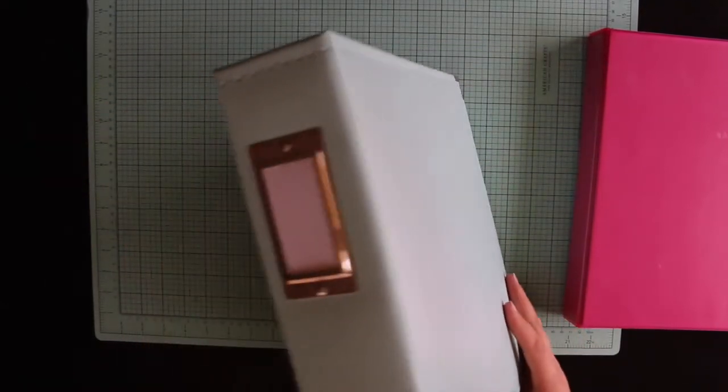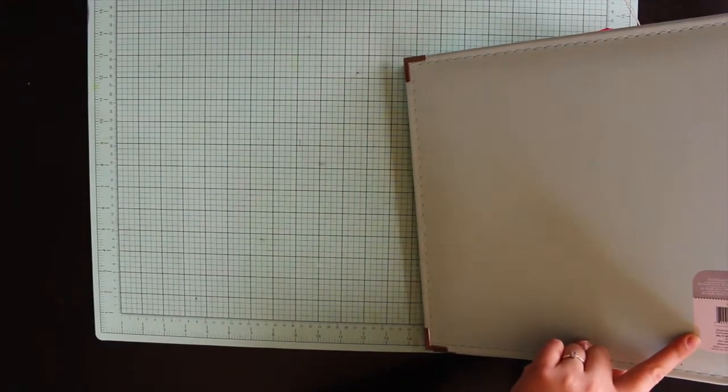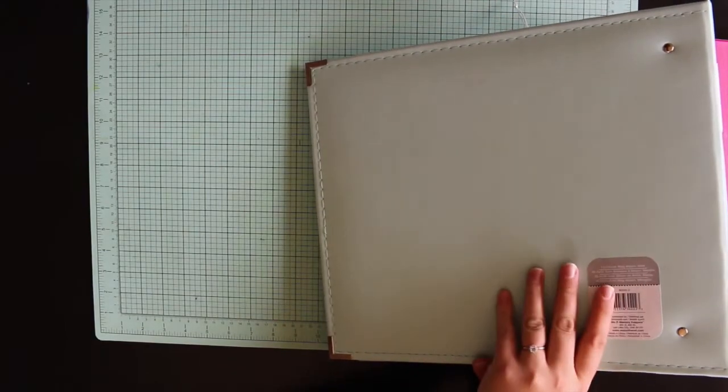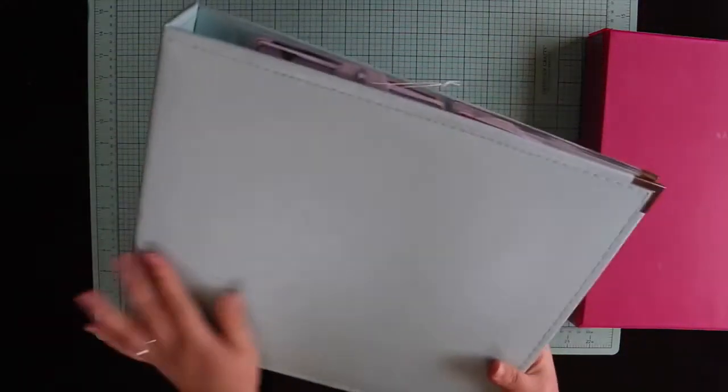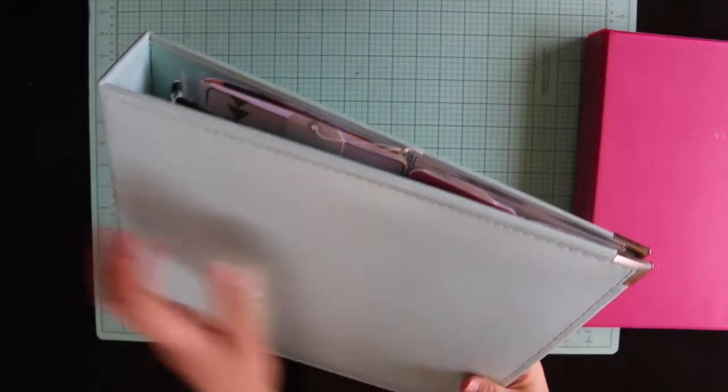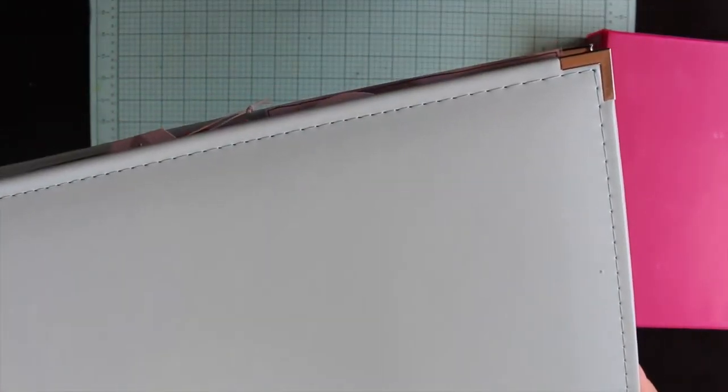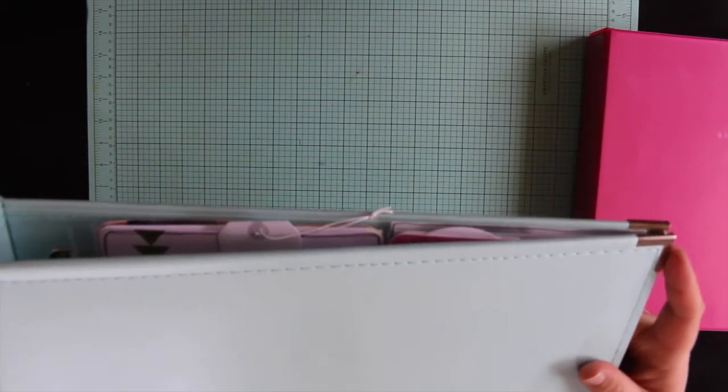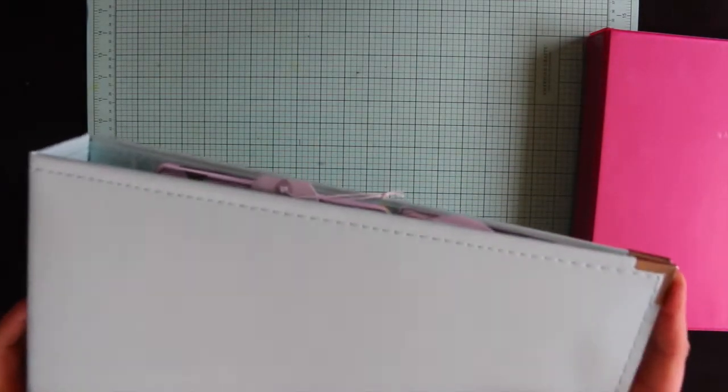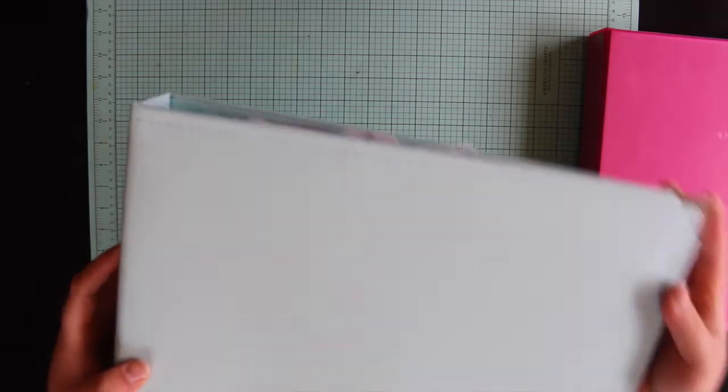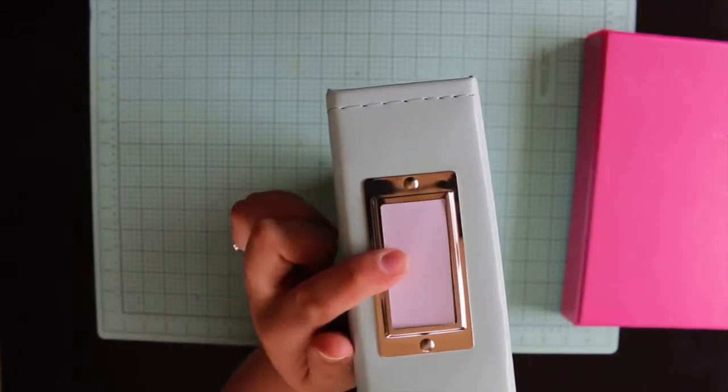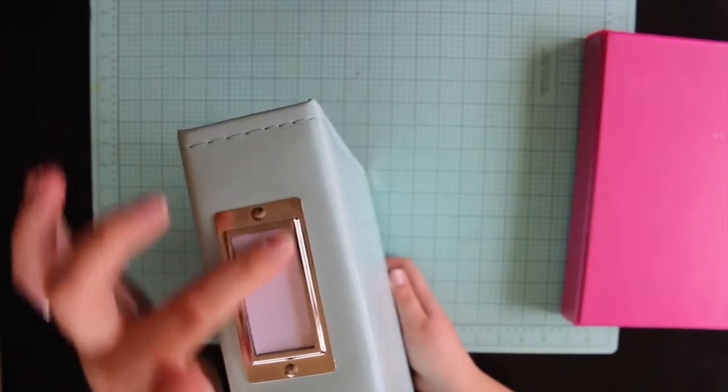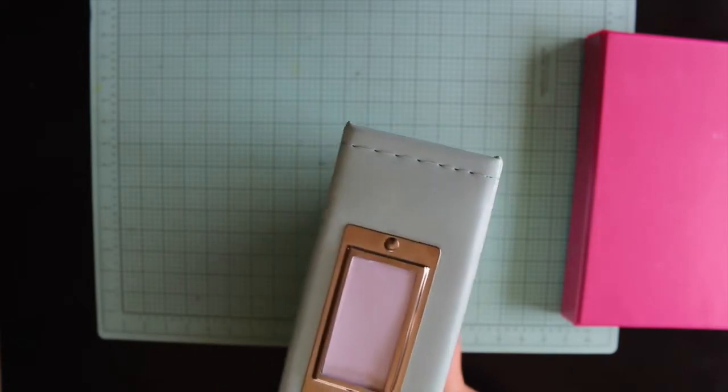So I've got four of these We Are Memory Keepers Mint 12x12 inch ring albums. We Are Memory Keepers does such a beautiful job of their albums, you've got the beautiful stitching and the metal corners. And I find the metal corners so important because otherwise they get a little bit banged up.